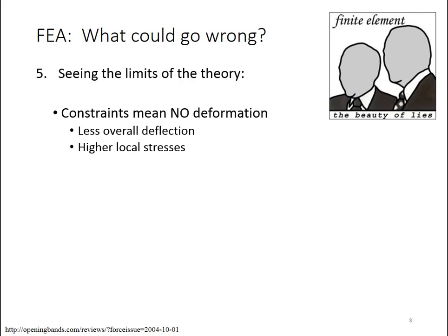So the theory says that we should be able to assume no deformation and we'll get a correct answer, or nearly correct. But if you focus on that joint where you've prevented all deformation, you will see higher local stresses. FEA will allow you to look there. If you're doing hand calc, you wouldn't have been able to look in that area.